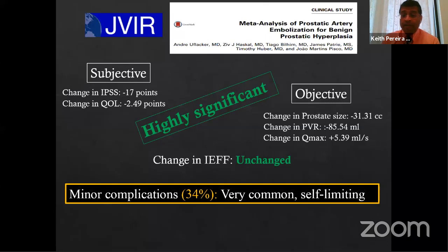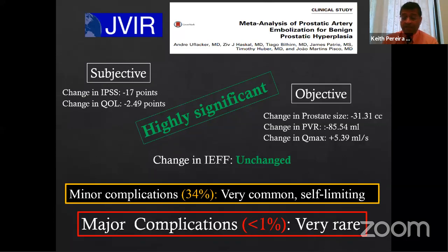Regarding complications: minor complications are high at 34%, but these are largely post-PAE syndrome symptoms — similar to a UTI — and are self-limiting, usually resolving in five to seven days, after which patients say their life has changed. Major complications such as blood transfusions or hospital stay are less than 1%. PAE is an outpatient procedure, so even one day of hospital stay is considered a big deal.